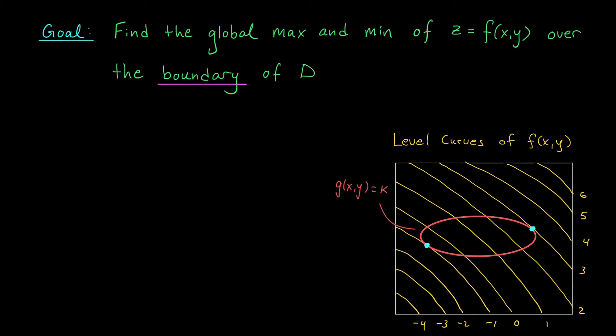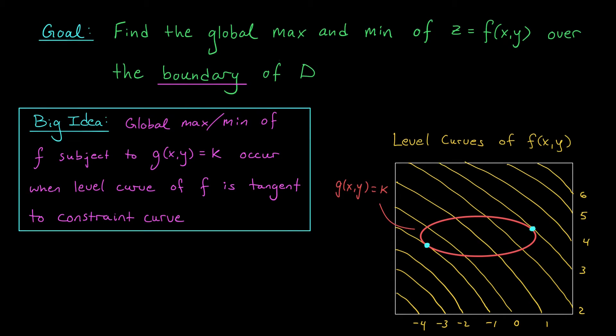The big observation here is that the global max and min of our function, subject to this constraint, must occur at points where the level curves are just tangent to the constraint curve. Now, this is a pretty observation, but how do we actually use this in practice to help locate the global max and min? How do we find the points where the level curves are just tangent to the constraint curve?